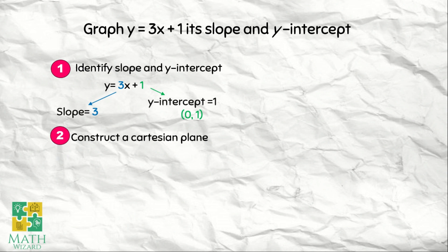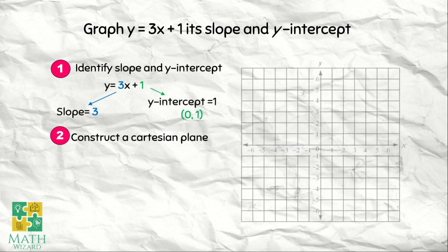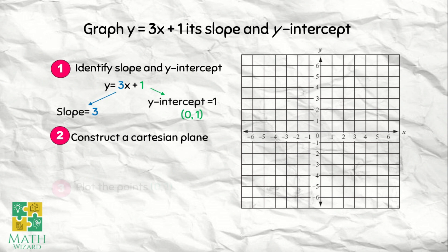So munod na step, we need to construct a Cartesian plane. We have this Cartesian plane. And then ipa-plot natin yung point na 0 and 1. So x is 0 and y is positive 1. We have this point.